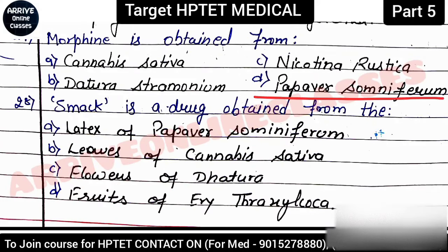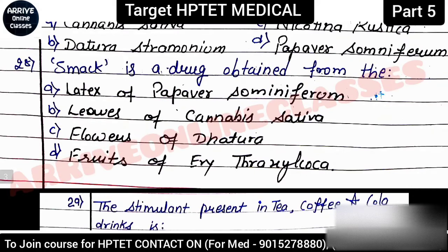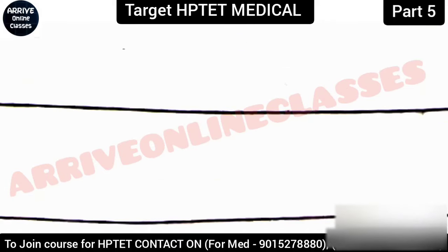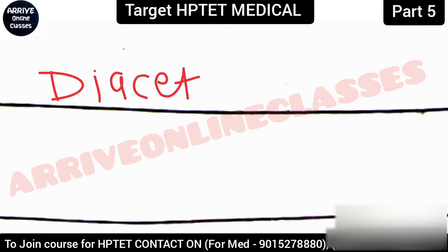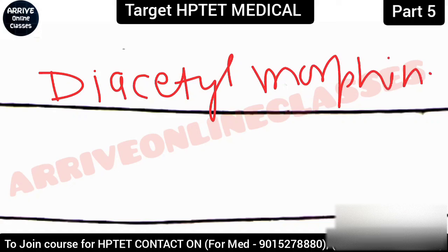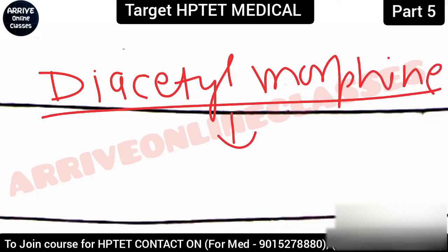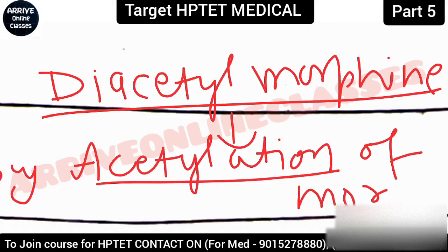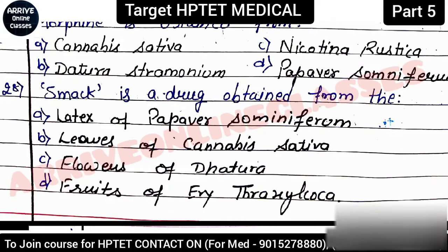The unripe capsule of the poppy plant is cut, and the latex that flows out is used. Smack is a drug also obtained from this. Chemically, smack is called diacetylmorphine. It is obtained by the acetylation of morphine. Morphine comes from the latex of the unripe capsule of the poppy plant — so the correct answer is option A.